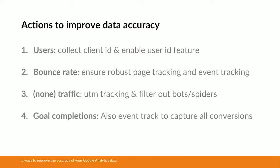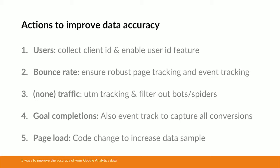By doing that you're going to have a none traffic channel which is a lot more accurate. In terms of the goal completions metric, we know that de-duplication is based on sessions, so also event track your goals — so you've got that dedupe data but you've also got the full data as well, which means you can do loads more analysis around your conversion rate and goals. And finally, in terms of the page load speed metric, implement the code changes to increase the data sample. More data means more segmentation. If you do all of these five points combined, you're going to have lots more information in Google Analytics, you'll be able to unearth more unique insights, and it's really going to help push your website and business forward. Thank you very much.